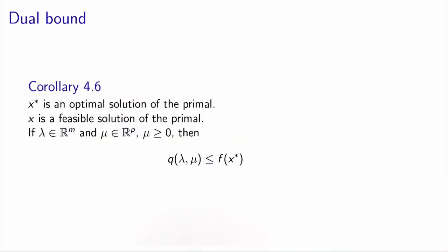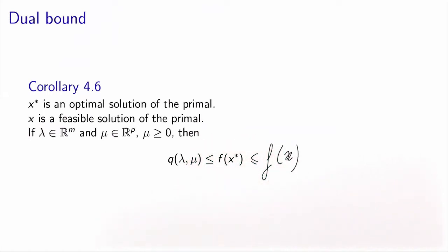There is an obvious corollary, numbered 4.6 in the book. Because x* is an optimal solution of the primal, it is less or equal to the value of f at any feasible solution. So if x is a feasible solution of the primal, then the value of the dual function is always less or equal to the value of the primal function. Whenever you take valid values of lambda and mu — meaning mu non-negative — and a feasible primal solution, the dual value is always the lowest.